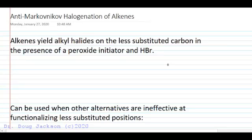Let's talk about anti-Markovnikov halogenation of alkenes. Alkenes yield alkyl halides on the less substituted carbon in the presence of a peroxide initiator and hydrobromic acid.